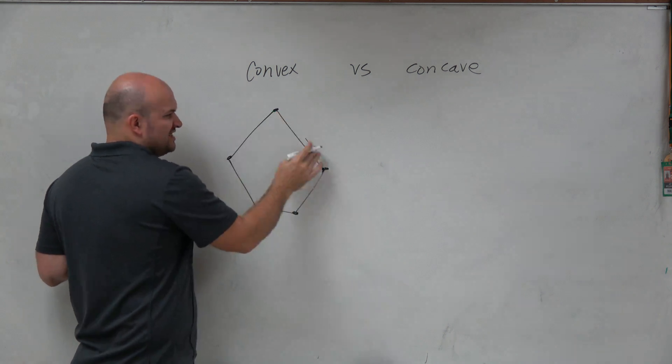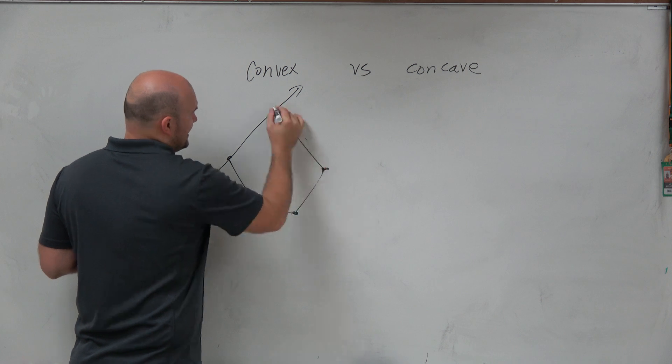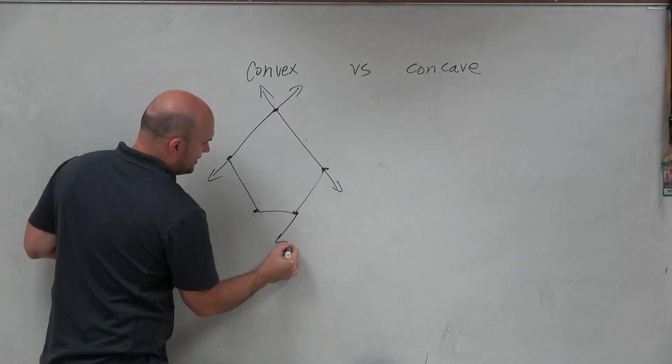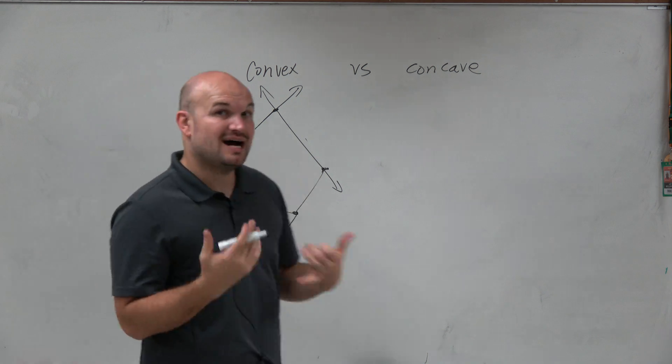Now they're all line segments - each line is a line segment. But if I was going to extend them, you can see that each side never enters the interior. Therefore, this would be what we'd call a convex polygon.